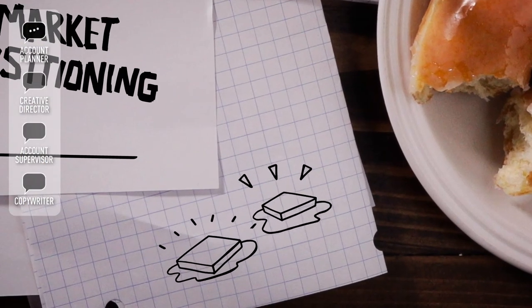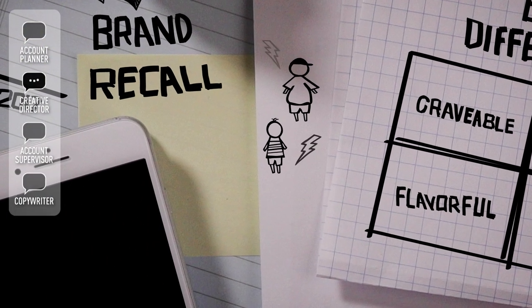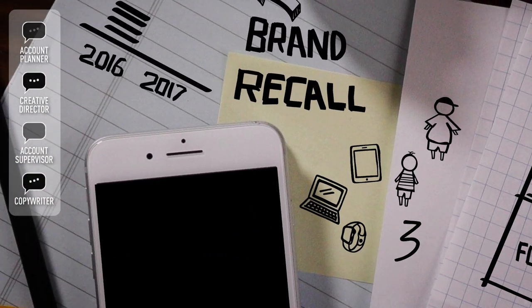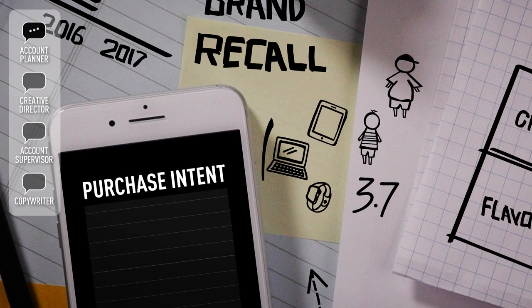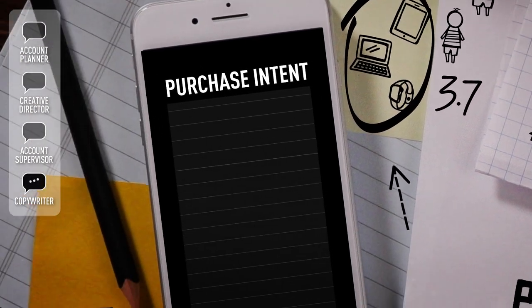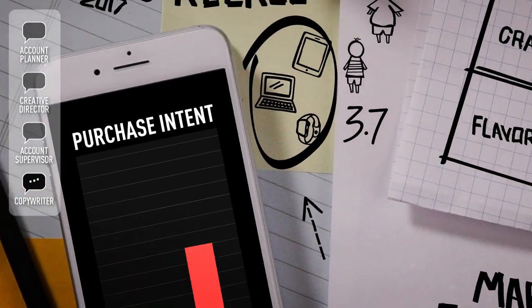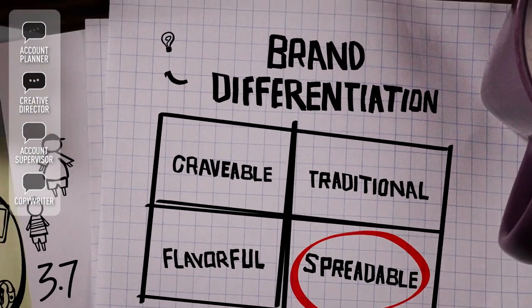All right, we're selling butter to kids, connected kids. These kids are surrounded by 3.7 devices at any given time. Exactly, that's our insight. Embrace the comforts of butter, or butter melt into it. We're not writing headlines here, we need the big idea.